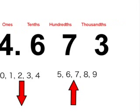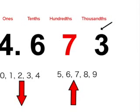Here we have the same example 4.673. This time we will be rounding the hundredths column, which has a 7. We now look at the thousandths column.